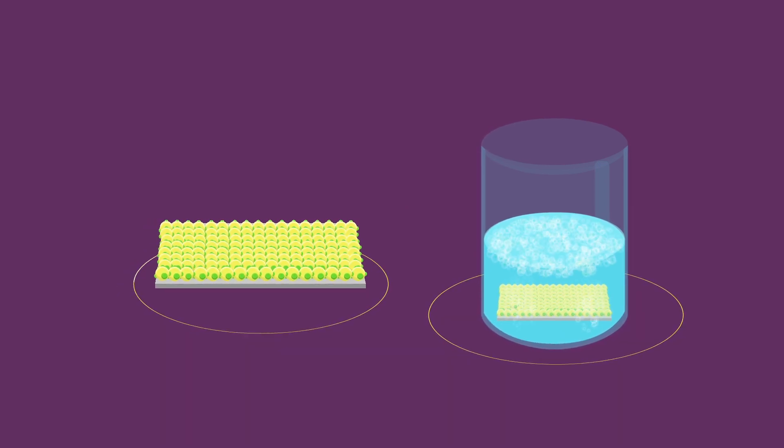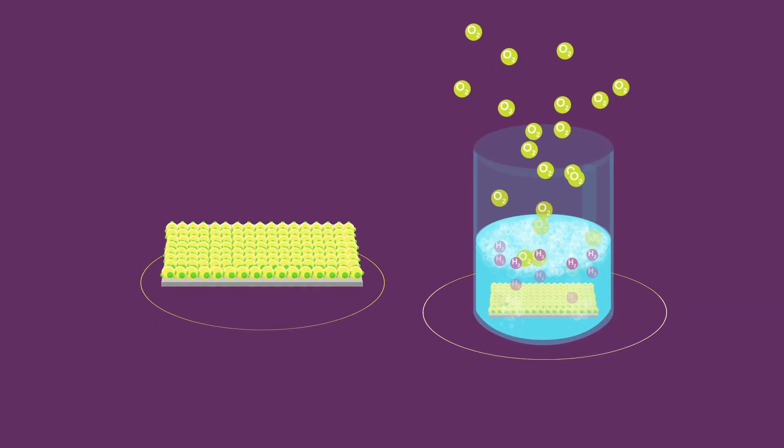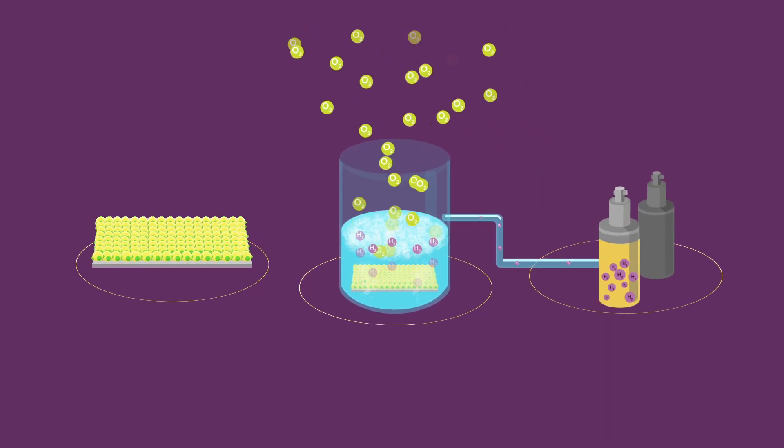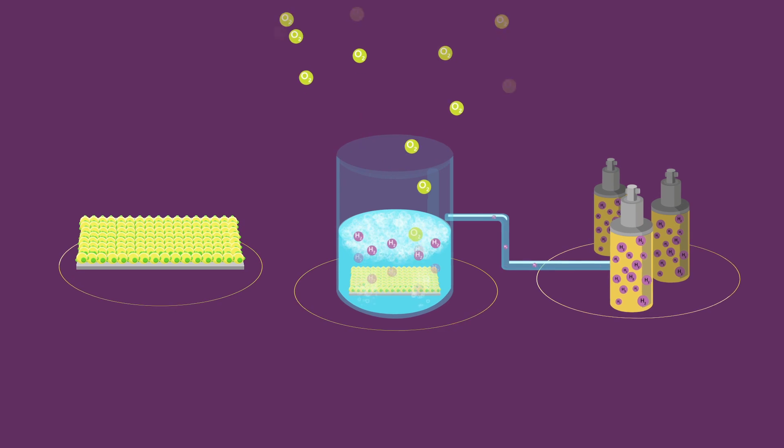One such option is photocatalytic water splitting or artificial photosynthesis that has attracted much attention as this process allows for the large-scale production of hydrogen as a renewable fuel.